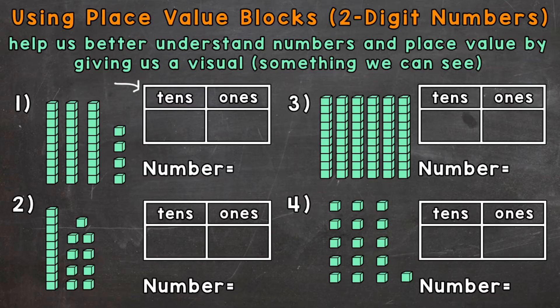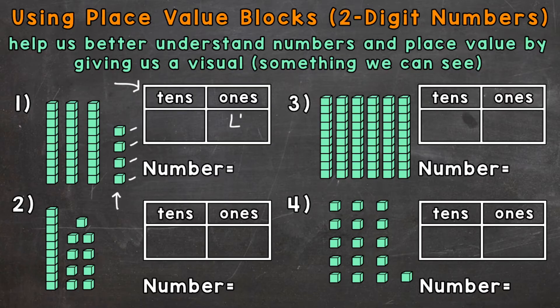As far as the blocks go, we're going to start with the individual blocks. Each individual block represents one whole. So how many blocks do we have? We have one, two, three, and four. So we're going to put a four in the ones place, because we have four of those individual single blocks. So four in the ones place.